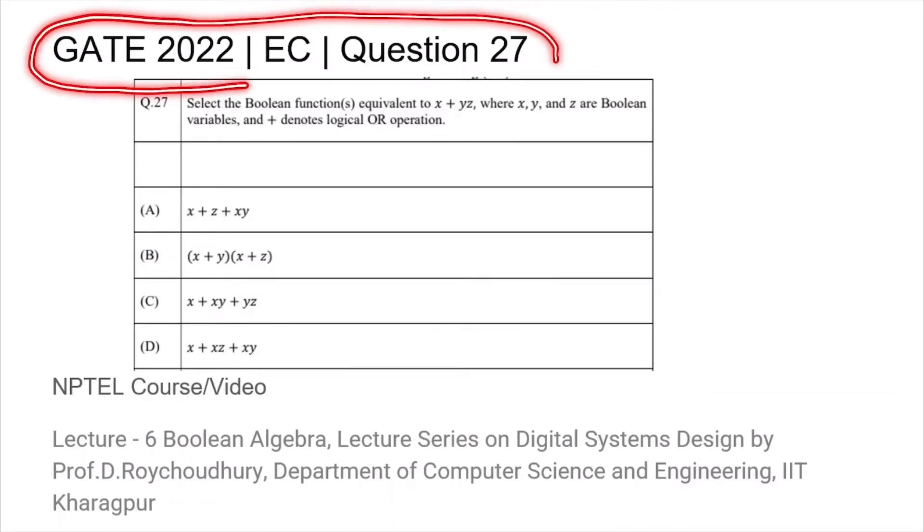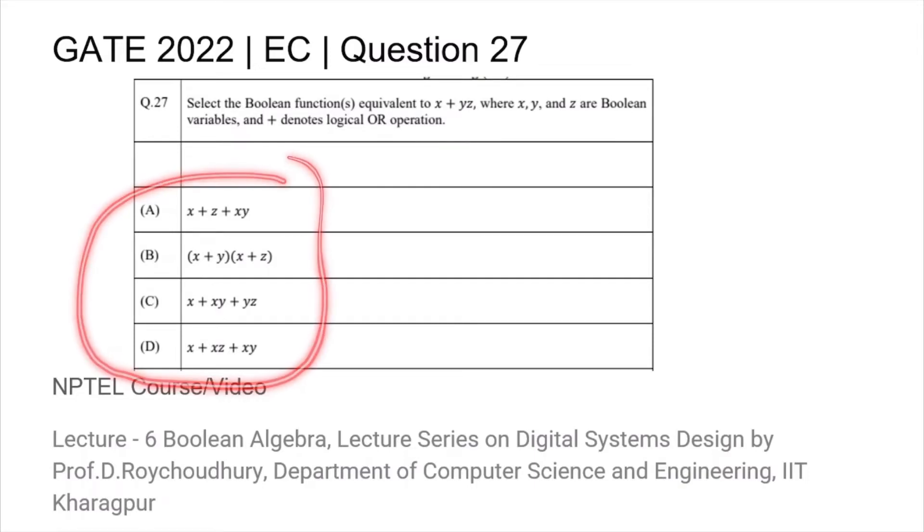This is question 27 from the GATE 2022 EC paper where we are given four Boolean expressions and are asked to find out which of them are equivalent to X or YZ.